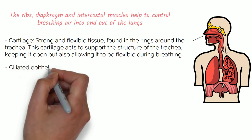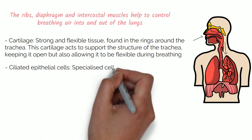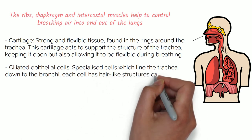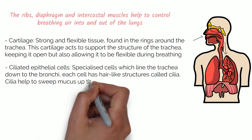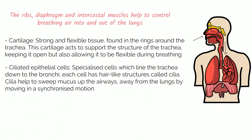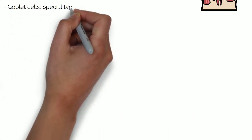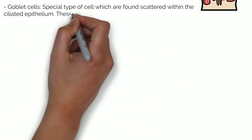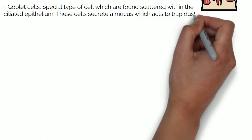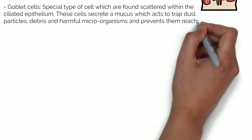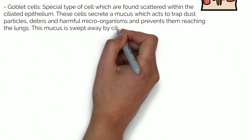Ciliated epithelial cells are specialised cells which line the trachea down to the bronchi. Each cell has projections of hair-like structures called cilia. Cilia help to sweep mucus up the airways and away from the lungs by moving in a synchronised motion. Goblet cells are a special type of cell found scattered within the ciliated epithelium. These cells secrete a mucus which acts to trap dust particles, debris and harmful microorganisms, preventing them from reaching the lungs. This mucus is swept away by cilia.